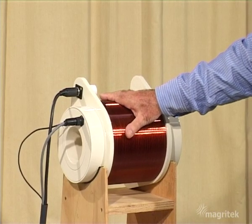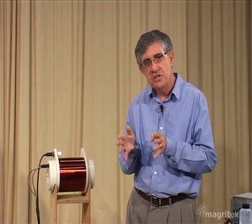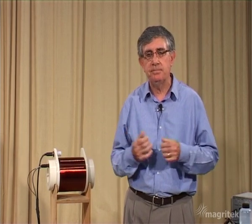To demonstrate T1 relaxation, we're not going to look at the process of coming to equilibrium in the Earth's magnetic field. Instead, we're going to look at the process of coming to equilibrium in the pre-polarizing field produced by this coil on the Terra Nova apparatus. We'll perform a number of experiments where in each case we vary the duration of the polarizing pulse before we start the NMR experiment and see how big the magnetization we've created is.